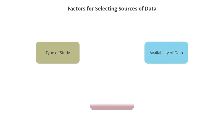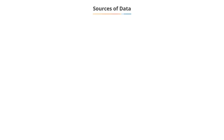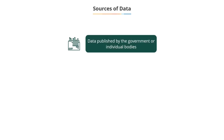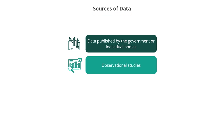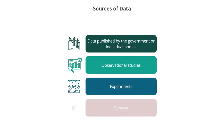Factors such as type of study, availability of data, and time frame have to be incorporated in selecting the sources of data collection. So, for statistical analysis, data published by the government or individual bodies, observational studies, experiments, and surveys are used as sources.